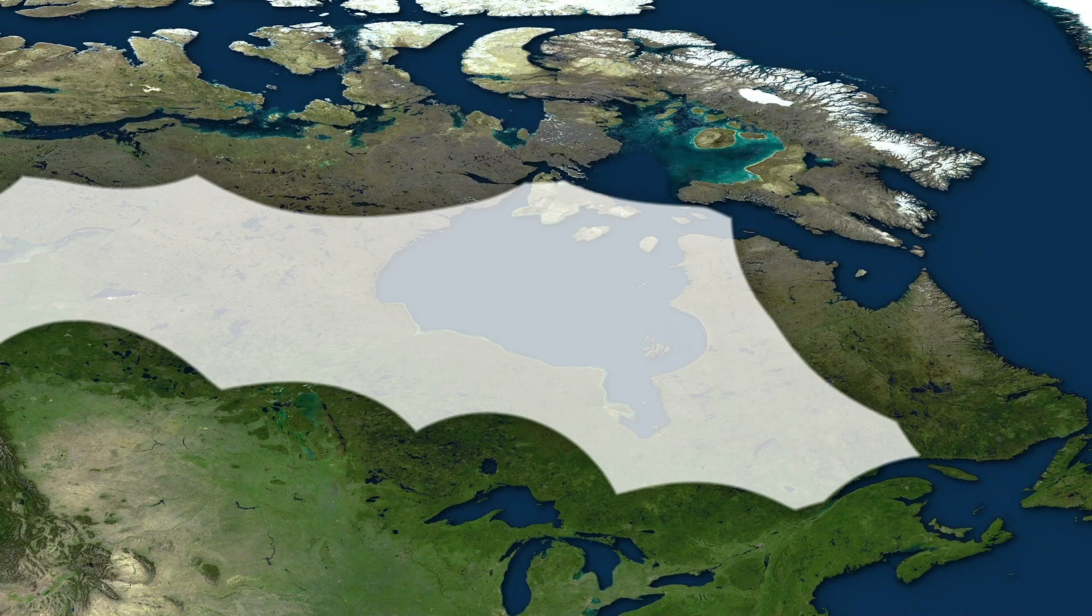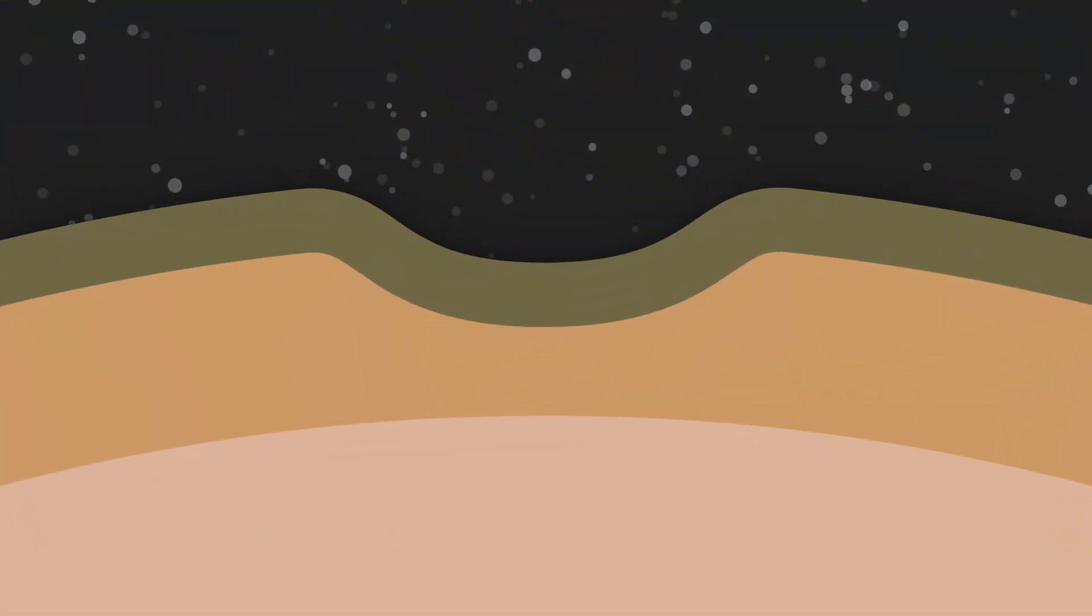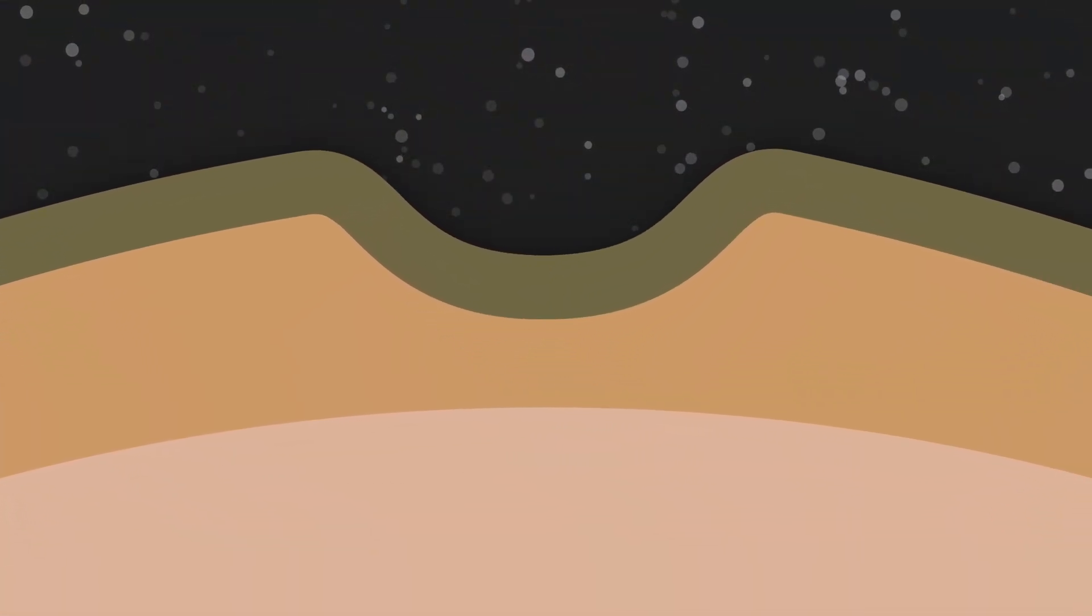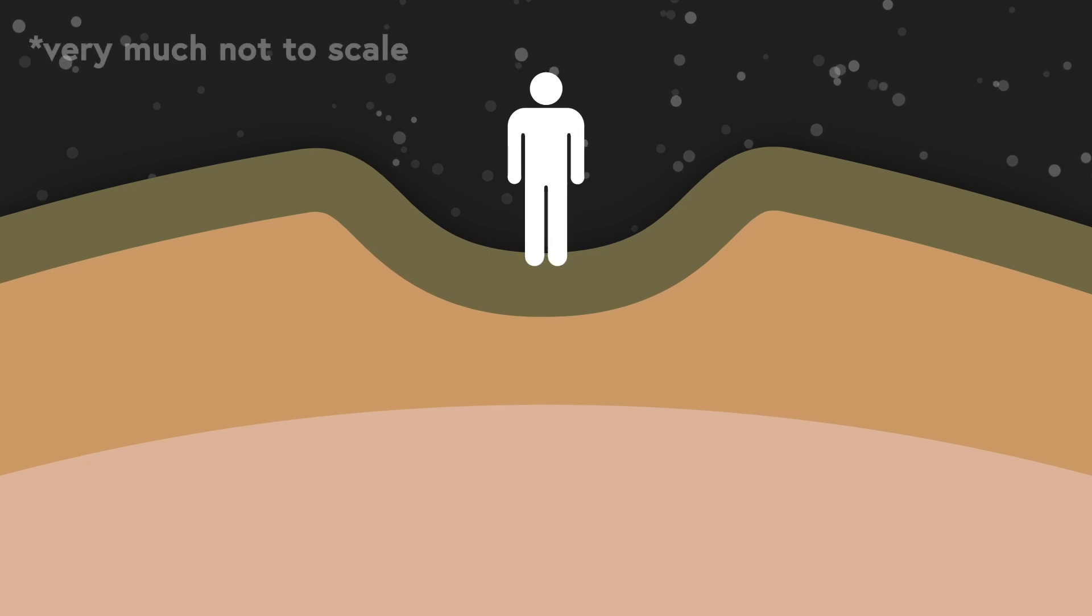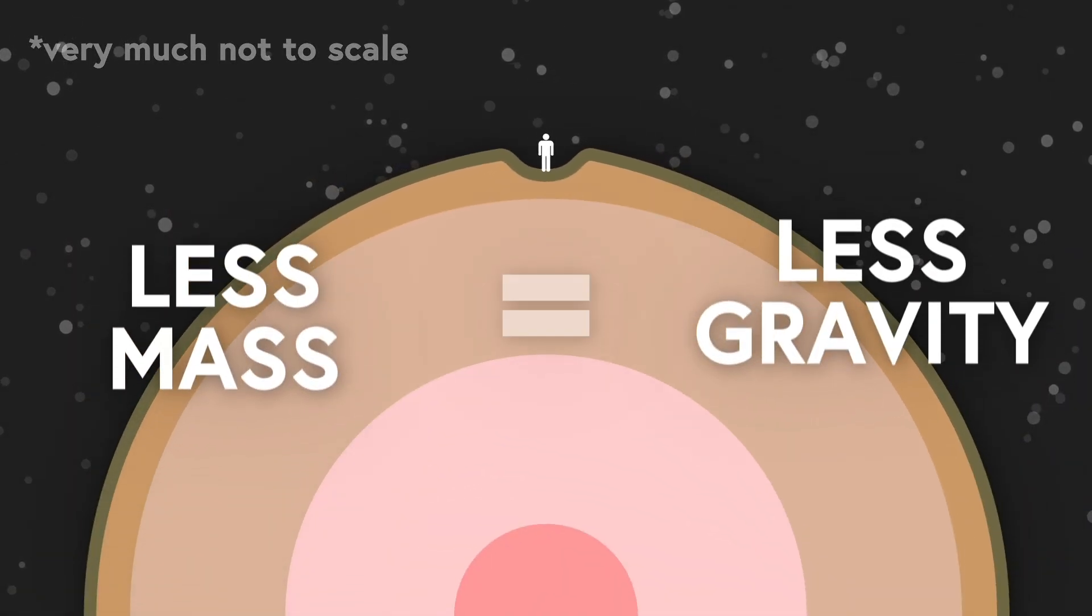About 10,000 years ago, the ice melted and it left behind a massive dent in the earth. That dent pushed a bunch of earth to the sides. So now, if you stand in that dent, there's less mass below you. And like we said before, less mass equals less gravity.